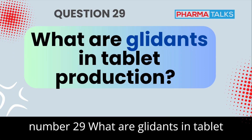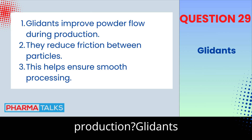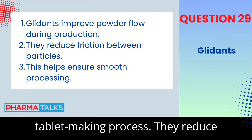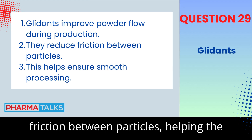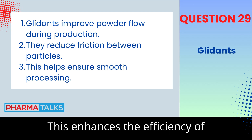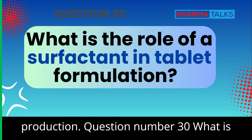Question 29: What are glidants in tablet production? Glidants improve the flow of powder during the tablet-making process. They reduce friction between particles, helping the powder move smoothly through machines. This enhances the efficiency of production.